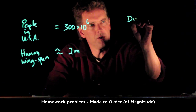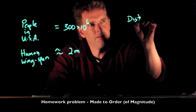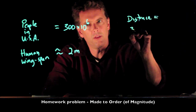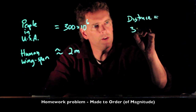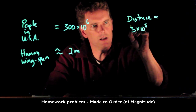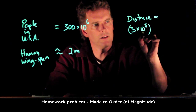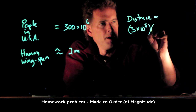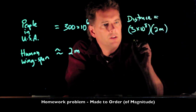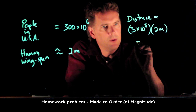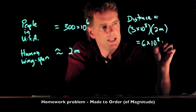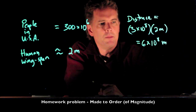The distance they would cover is 300 million, which is 3 times 10 to the 8, and we multiply by the wingspan of two meters. So what do we get? We get 6 times 10 to the 8 meters.